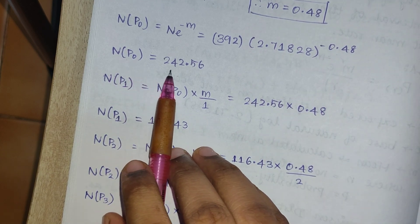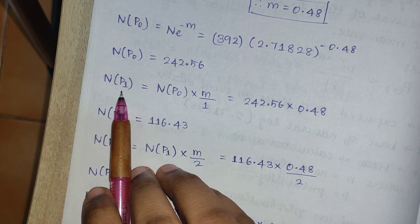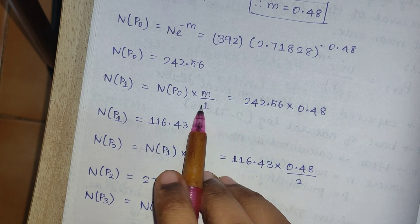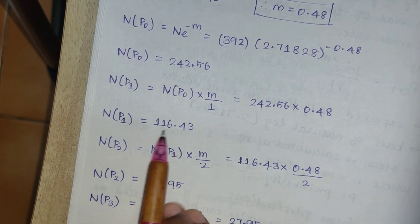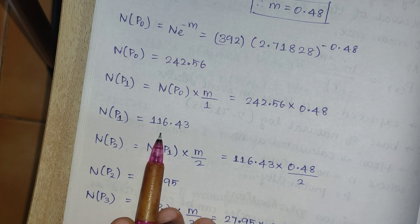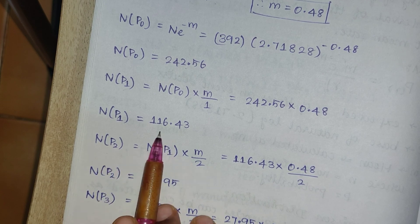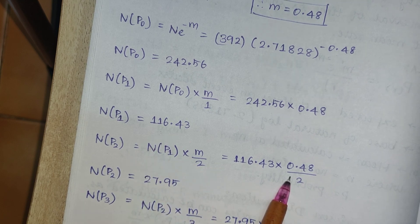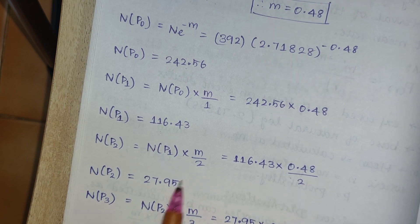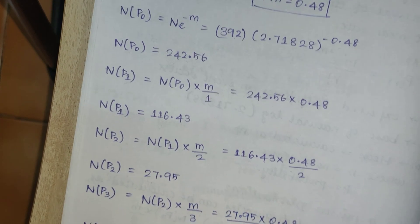Substituting, n*p0 is found first. Then p1 = n*p0 * m/1. Next, n*p2 = 116.43 * 0.48 / 2 = 27.95. We continue computing p3, p4, p5, p6 similarly.